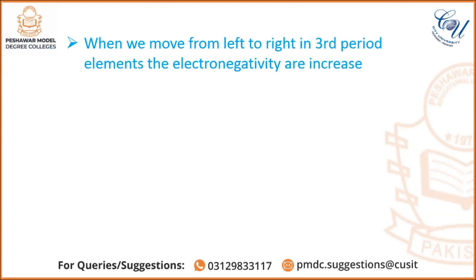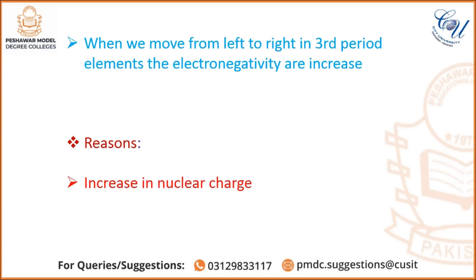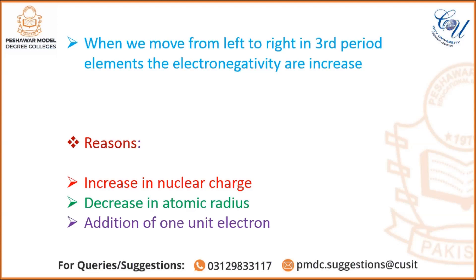When we move from left to right in the third period elements, the electronegativity increases. This is due to several reasons. The first reason is an increase in nuclear charge. When we move from left to right across period three, the nuclear charge increases. Similarly, there is a decrease in atomic radius, and also the addition of one unit of electrons.